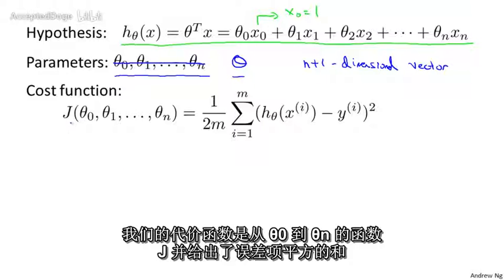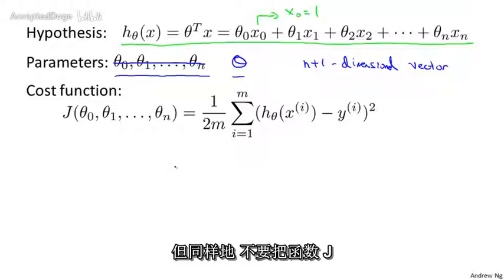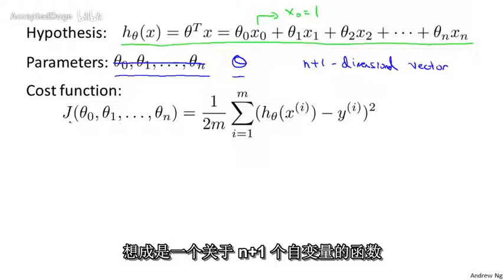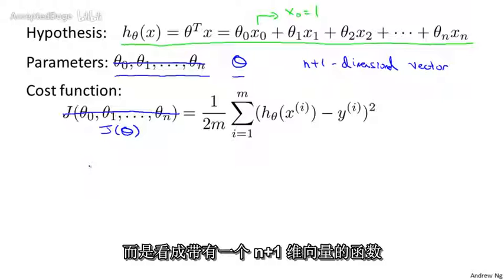Our cost function is J of theta 0 through theta n, which is given by this usual sum of squared error term. But again, instead of thinking of J as a function of these n plus 1 numbers, I'm going to more commonly write J as just a function of the parameter vector theta, so that theta here is a vector.